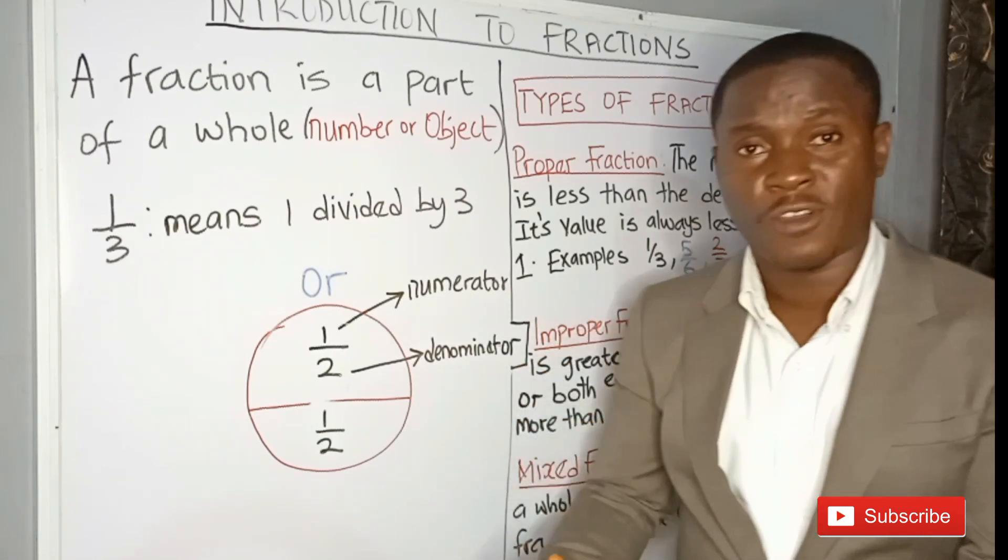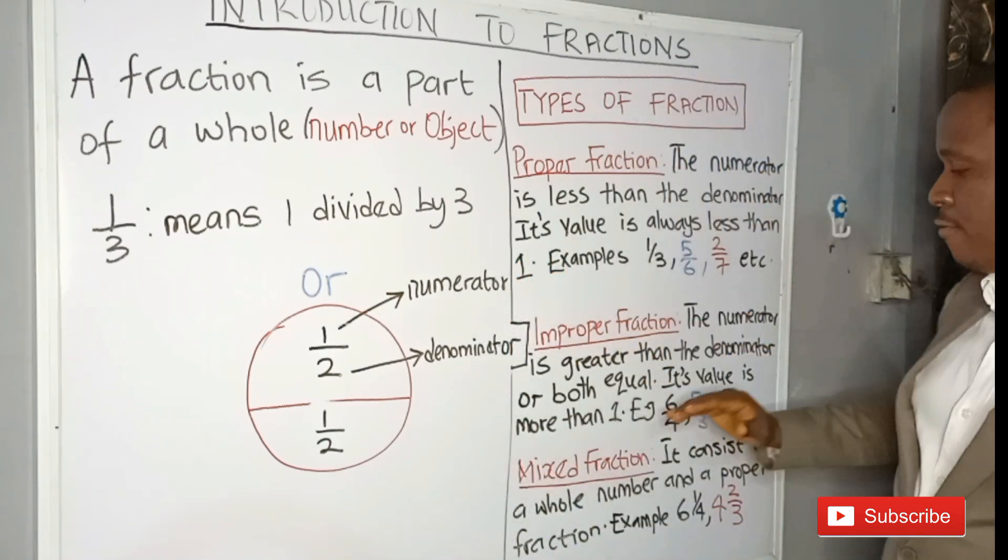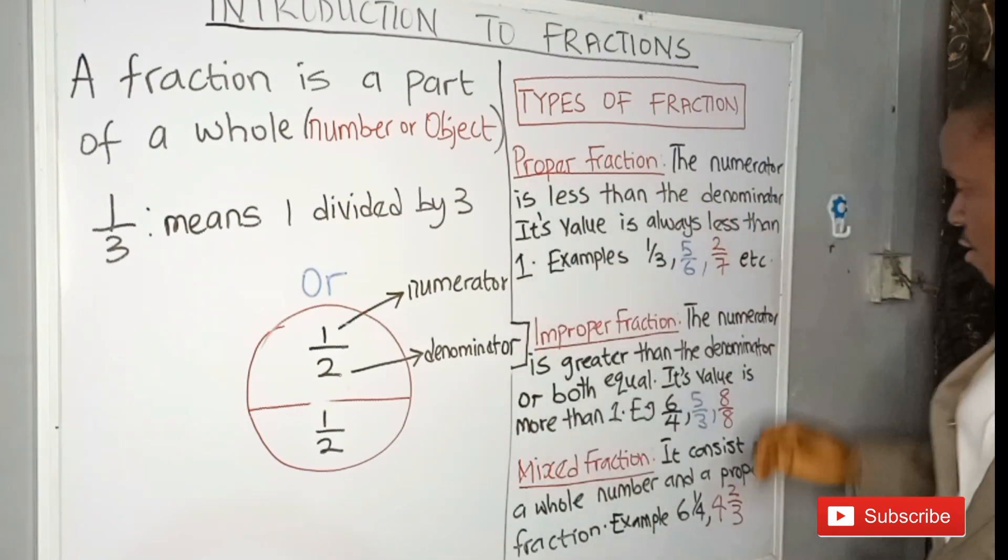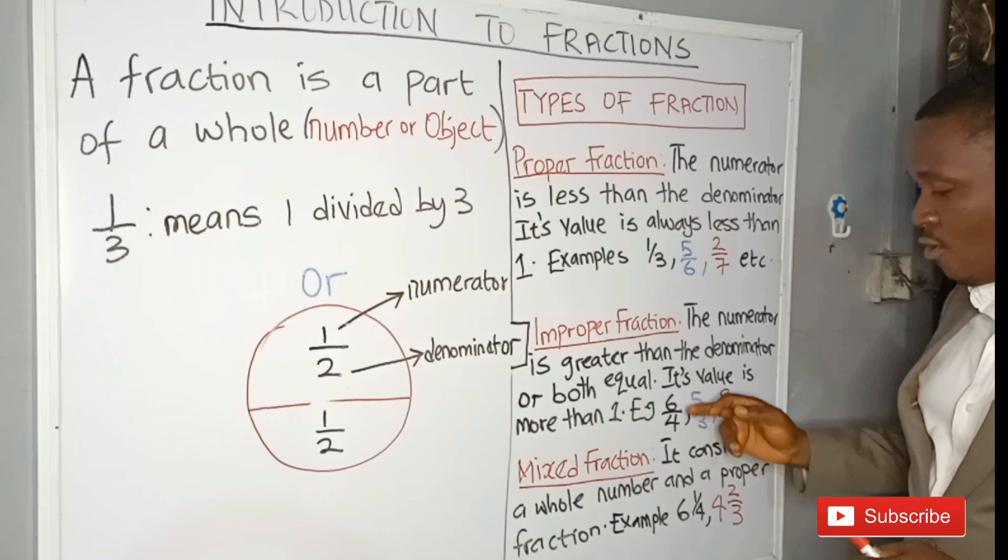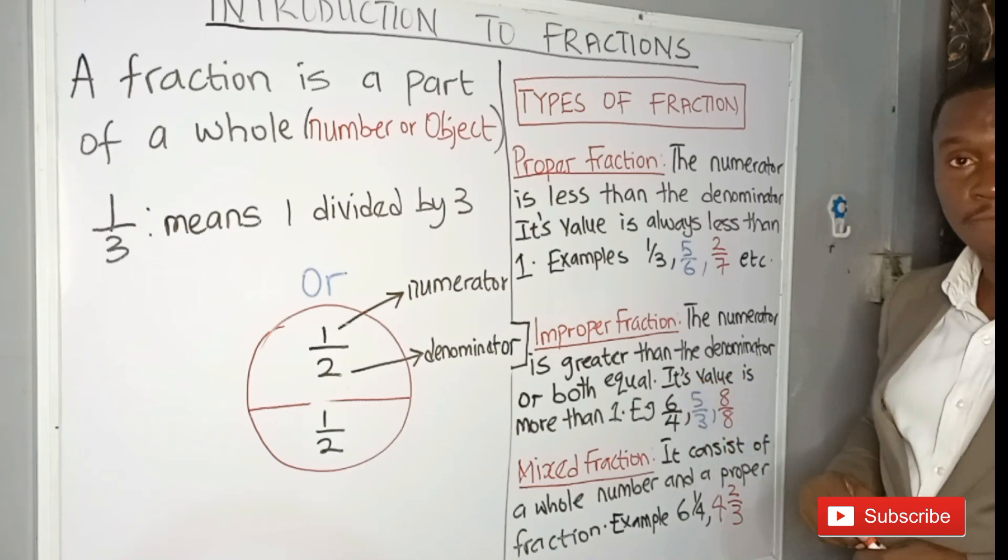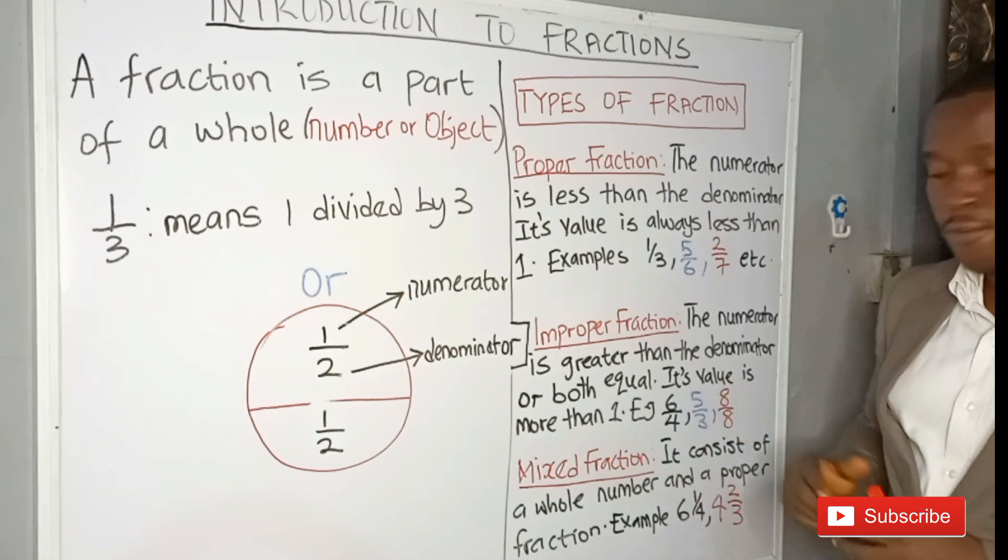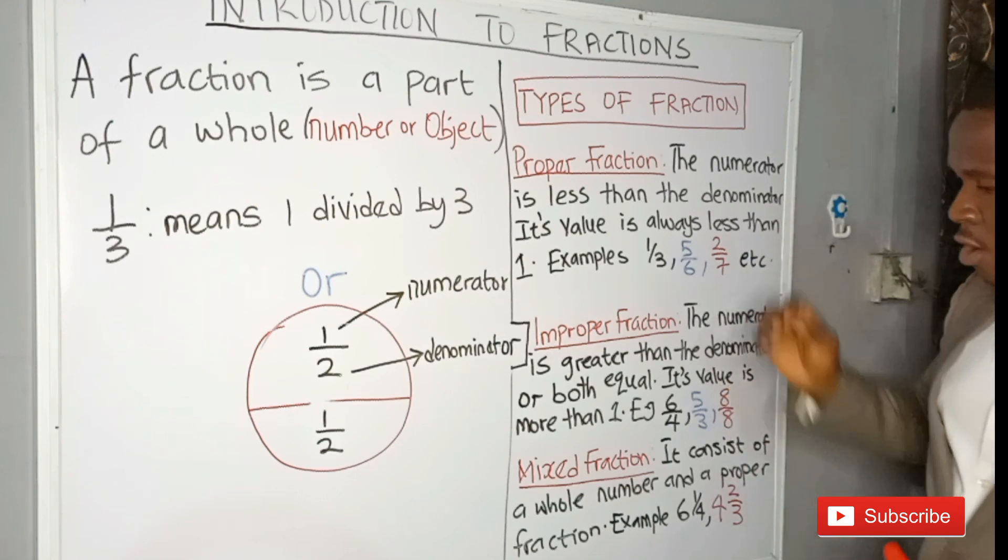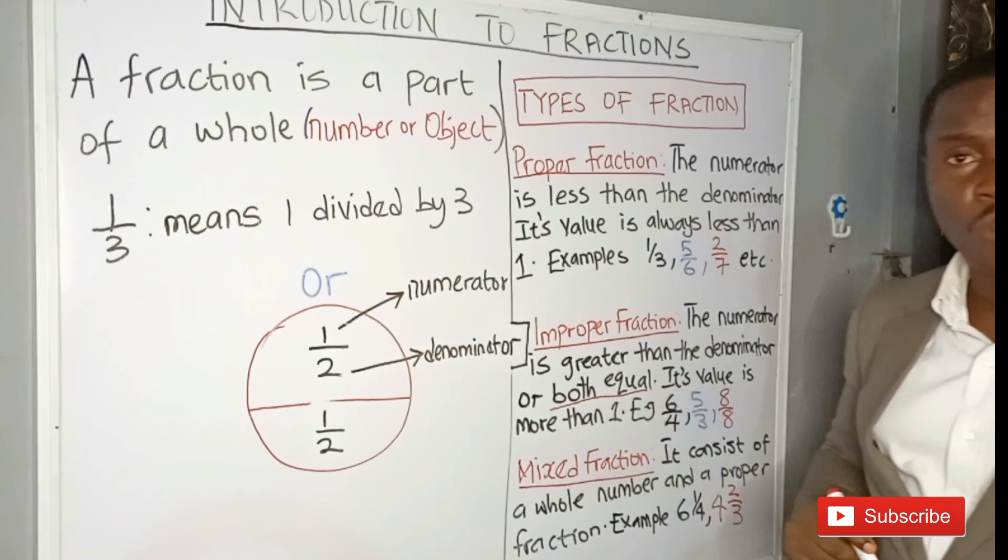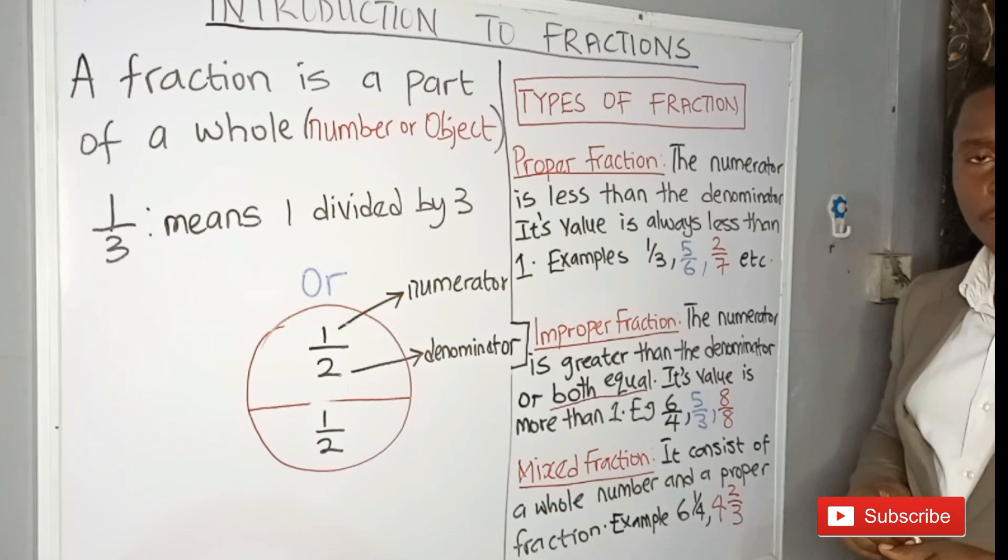The father is bigger than the son. So it is improper for the son at that tender age to lift his father up. The same thing happens here. It is improper for a small denominator to lift up a bigger numerator. For example, we have 6 over 4. It is not proper for 4 to be lifting up 6. Also, we have 5 over 3. It is not proper for 5 to be lifted by 3. But also, we have to note that even when both are equal, it is also called improper fraction. So we have 8 over 8 as an improper fraction.